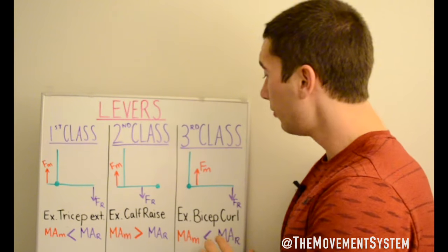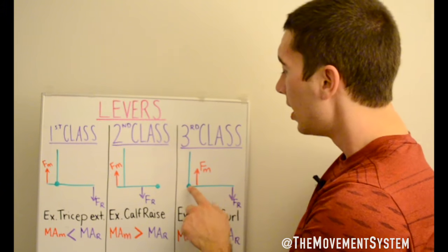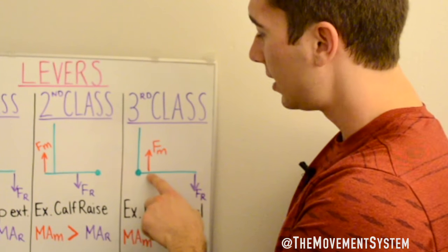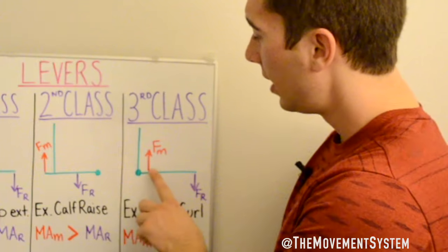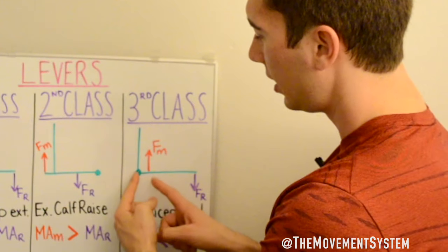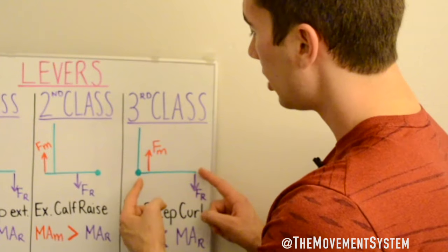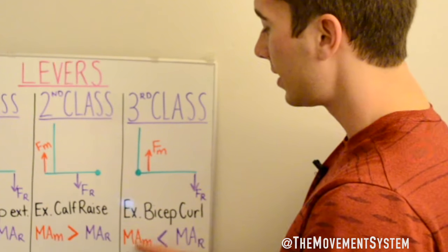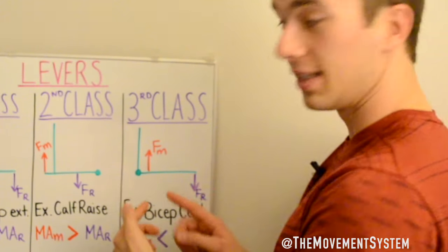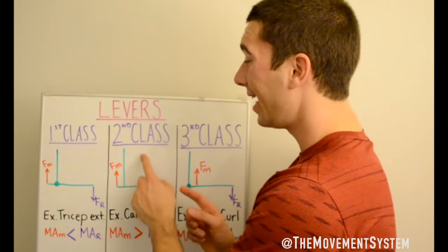Let's reinforce third-class levers since this is the most important one. Using the bicep example again: the elbow joint is the hinge and the bicep's distal attachment pulls up on the forearm. The moment arm of the muscle is the shorter distance from the fulcrum to where that force is applied, while the moment arm of the resistance is the full distance from the fulcrum to where resistance is applied. So the moment arm of the muscle is less than the moment arm of the resistance.